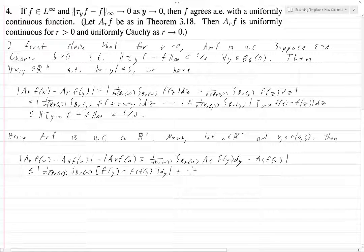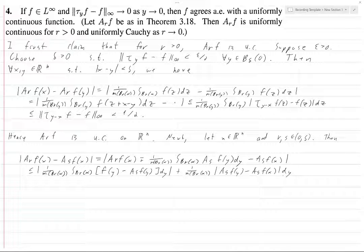Now here we're going to do 1 over m B_r(x) and then we have absolute value, a_s f(y) minus a_s f(x) dy. We've used the triangle inequality, and we've even used the triangle inequality again.